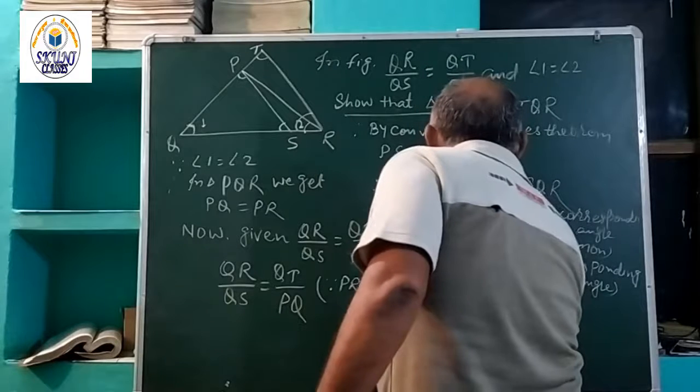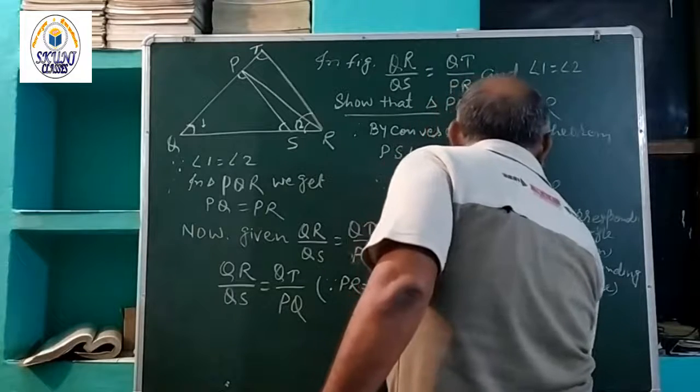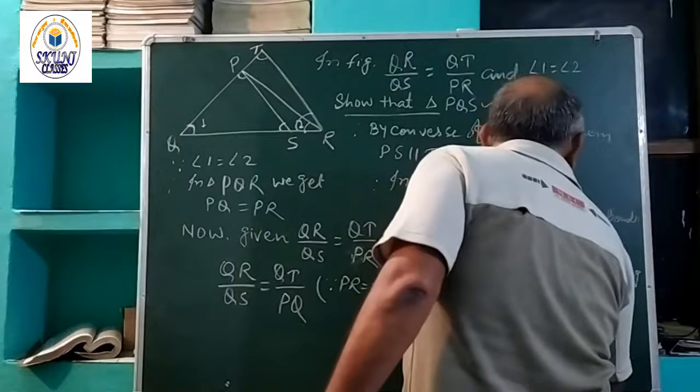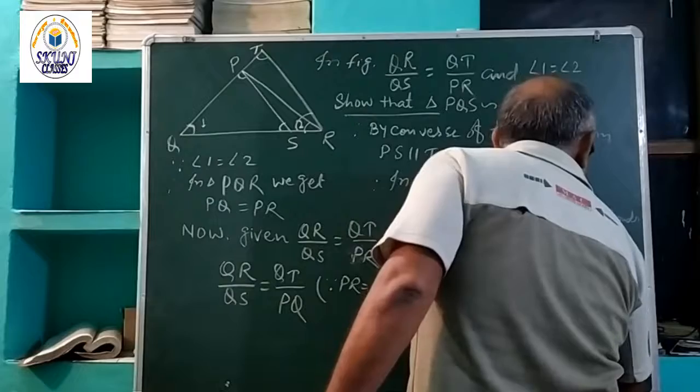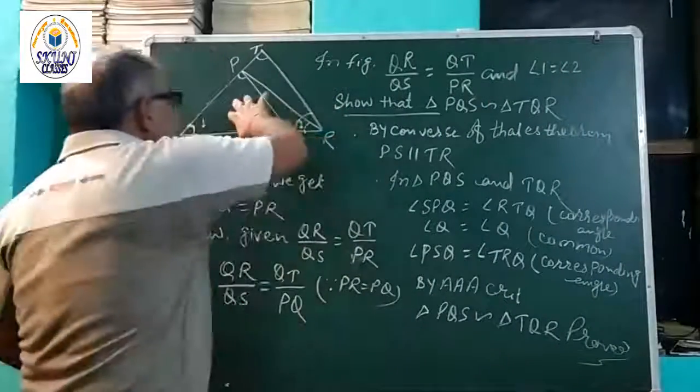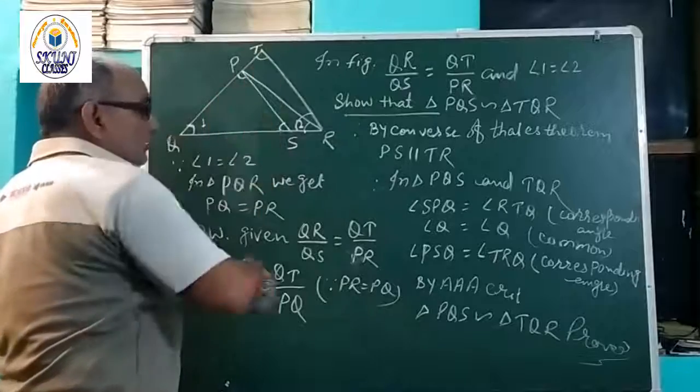Triangle PQS is similar to triangle TQR. This is the triangle congruence, so the two triangles are similar as we can see from the corresponding sides.